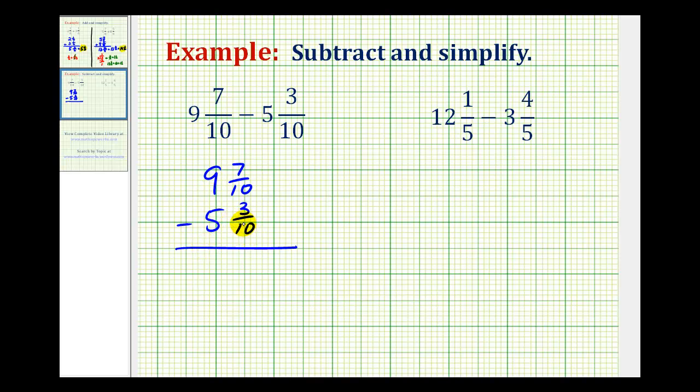In some cases, we will have to borrow from the whole number, but in this example we don't have to borrow because we can take 3 tenths from 7 tenths.